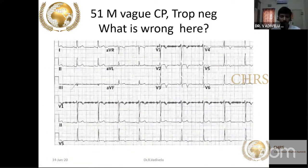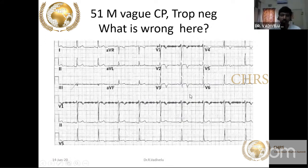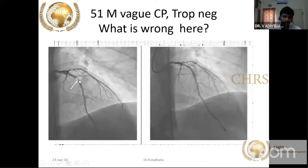A 51-year-old male presenting with chest pain, troponin negative. In V1 to V3, there is a biphasic T wave pattern — slight upright followed by T wave inversion — which can also disappear dynamically. This is Wellens syndrome, and angiography revealed 90–95% proximal LAD stenosis after the diagonal, confirmed after stenting.